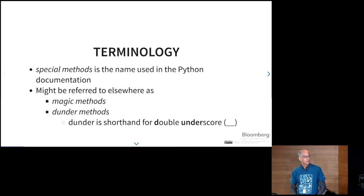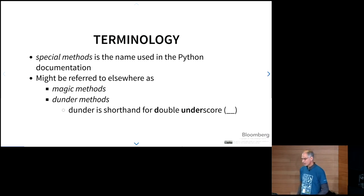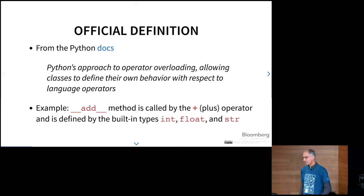Special methods, what are they? So special methods are the name used in Python documentation. You might also have heard these referred to as magic methods or Dunder methods. And for those of you that haven't heard the Python slang, Dunder stands for double underscore. The official definition from the Python docs is special methods are Python's approach to operator overloading, allowing classes to define their own behavior with respect to the language operators. So one example is Dunder add method, which is called by the plus operator, and is defined by various built-in types such as int, float, and str.